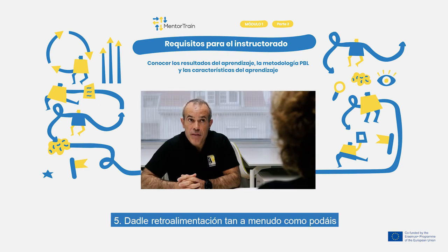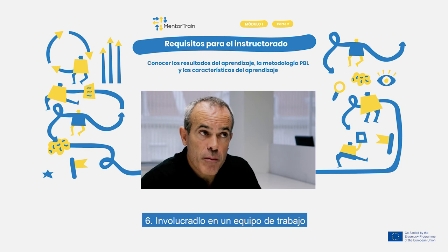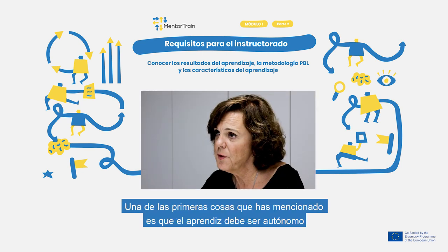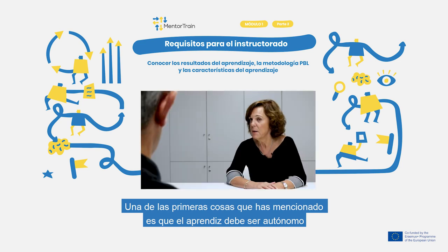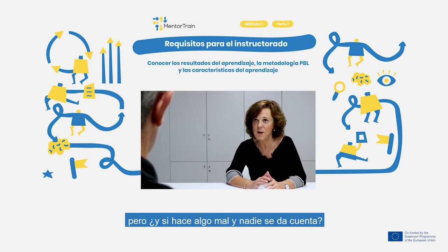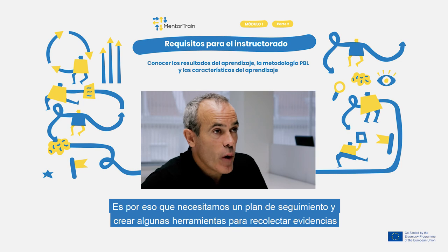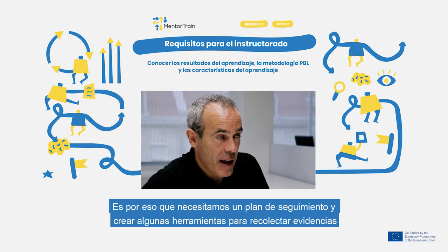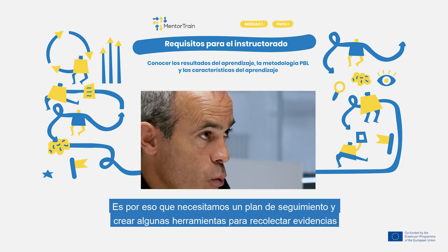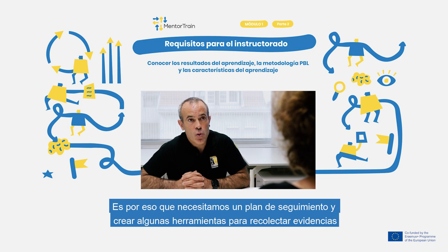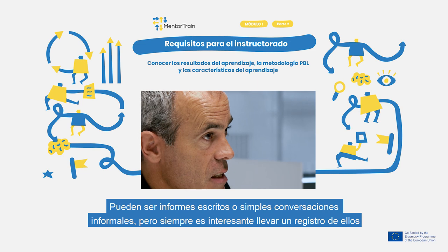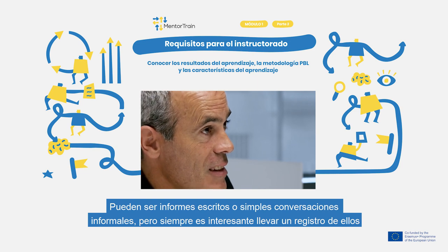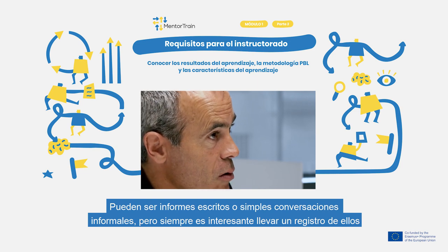Fifth, give feedback to him as often as you can. And sixth, enroll him in a work team. One of the first things you mentioned is that the apprentice should be autonomous, but what if he does something wrong and nobody notices it? That's why we have to make a monitoring plan with him and with his workmates and create tools for evidence. They could be written reports or just informal conversations, but in any case we have to keep a record of them.